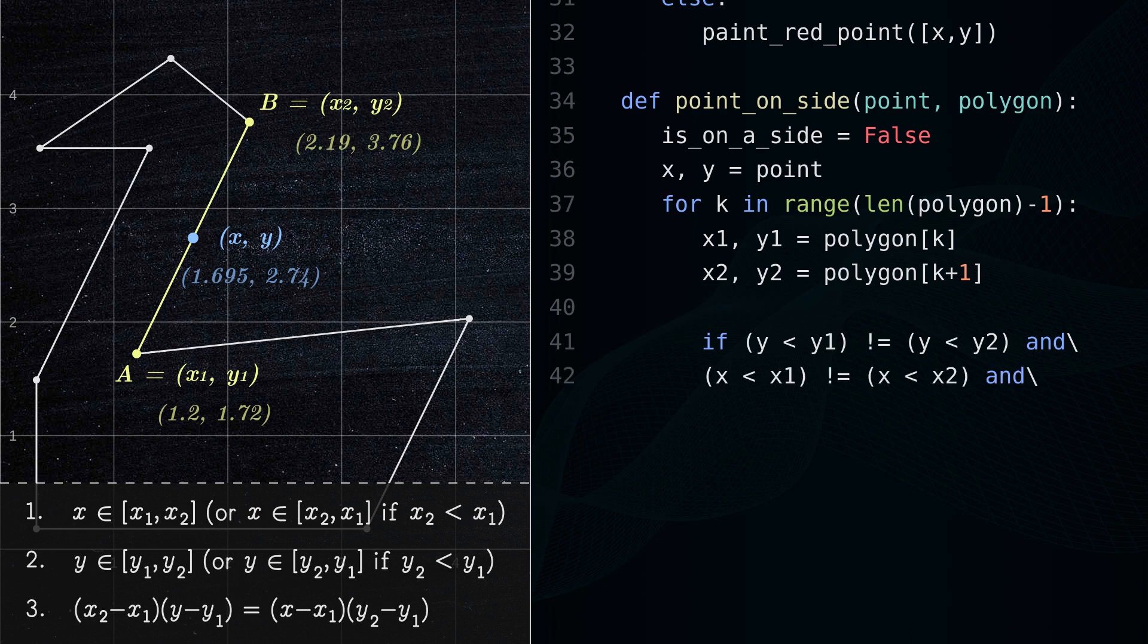And third, the slope of the line segment is equal to the slope connecting the point and any endpoint of the line segment.